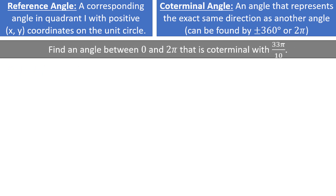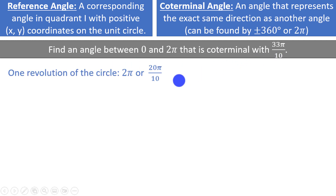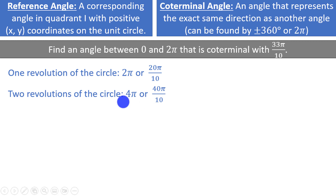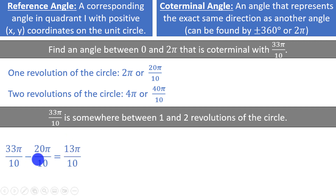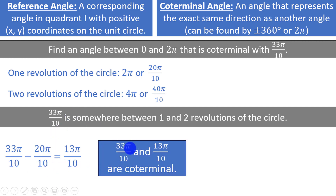Let's say we want to find an angle between 0 and 2 pi that is coterminal with 33 pi over 10. One revolution of the circle is 2 pi, or 20 pi over 10. Two revolutions would be 4 pi, or 40 pi over 10. That means 33 pi over 10 is somewhere between the first and second revolution. If we subtract 2 pi, or 20 pi over 10, we get 13 pi over 10. That means 33 pi over 10 and 13 pi over 10 are coterminal — they represent the exact same direction.